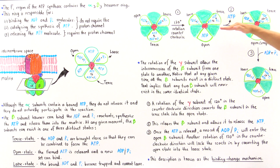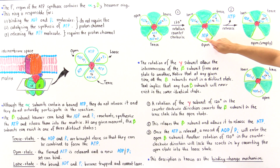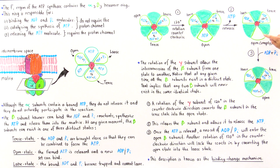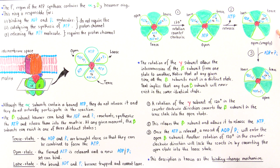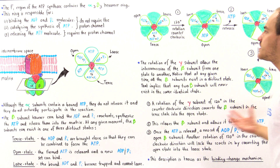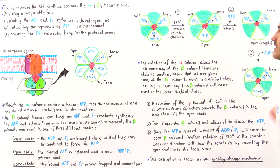Once we go from one structure to the next, the ATP molecule leaves, creating an empty site. In the final step, once the ATP leaves, ADP and orthophosphate can enter that location and the cycle repeats itself.